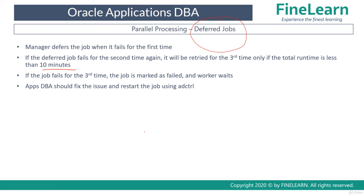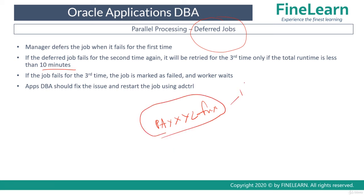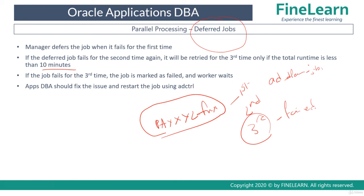For example, if generating a specific form like PAYXYZ.fmx fails the first time, a new table called AD_DEFERRED_JOBS is created and the job is deferred and rerun. If it fails a second time and then a third time, it is considered a failed job. As an Apps DBA you must fix the underlying issue and then retry the job using the ADCTRL utility.